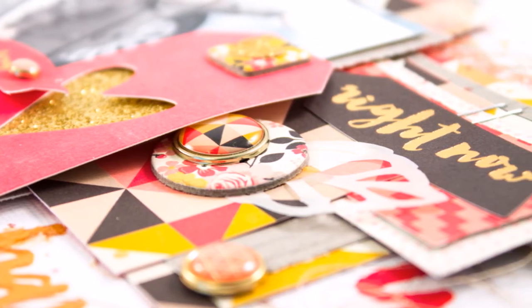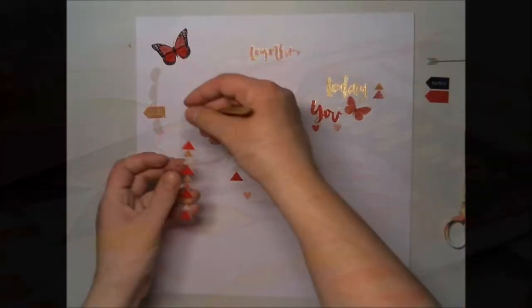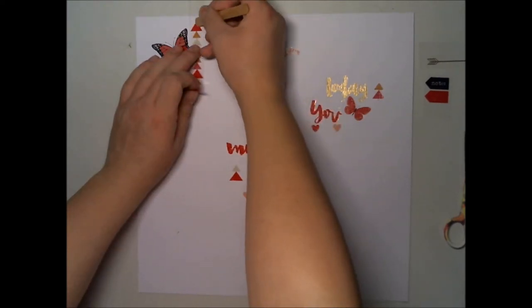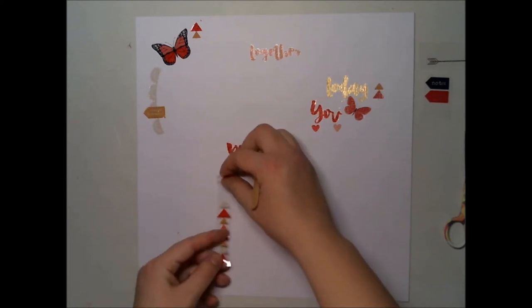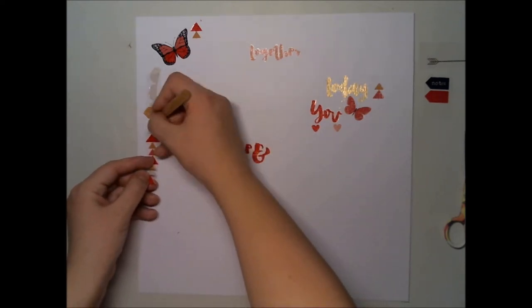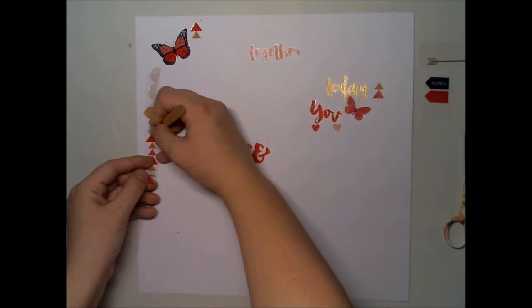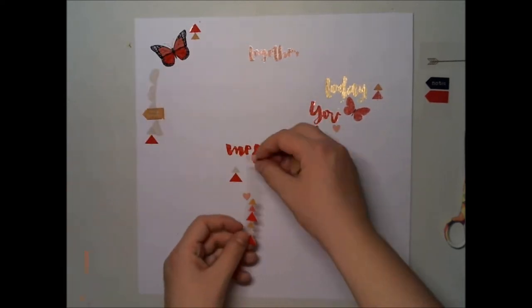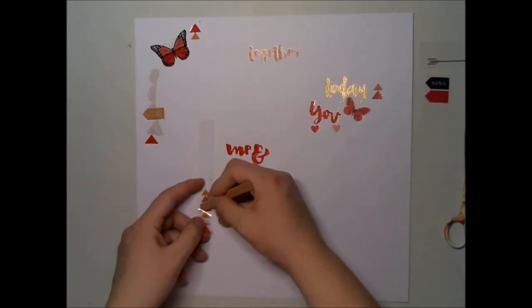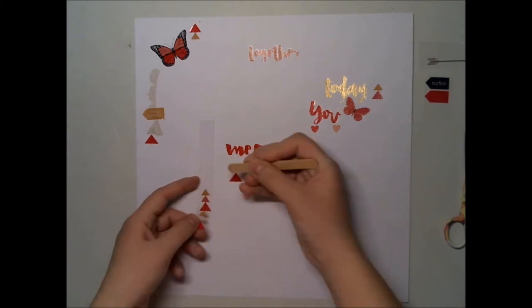I thought this would make a great background, so I started to add these wrap-ons to a white cardstock just here and there, a little on top of each other, to create some layers and details as well.